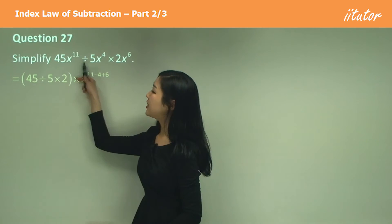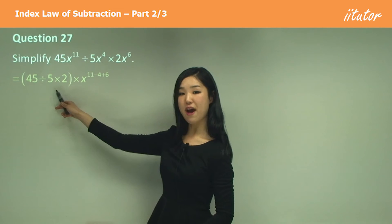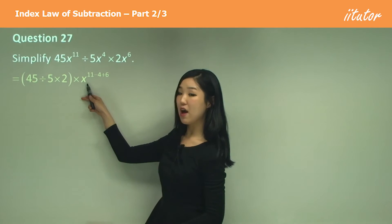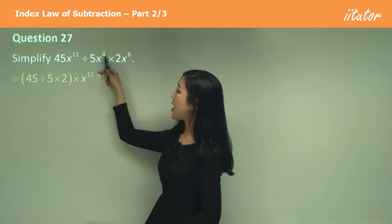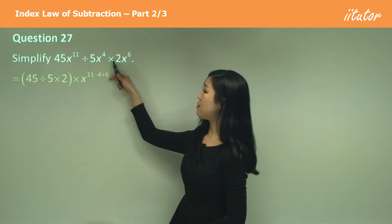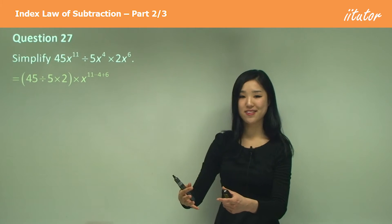So 45 divided by 5 then times 2 out the front. We're gathering the numbers together. x will have a power of 11 minus 4, because we're dividing we subtract. Then because we're multiplying, we add the 6, so plus 6. You can put them all at once.